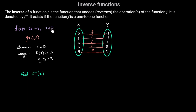Since x is greater than or equal to 0, when x equals 0 y equals negative 3, and for any x greater than 0, y will be greater than negative 3. So the range is y greater than or equal to negative 3. The inverse of f is the function that undoes f — so if f takes us from 0 to negative 3, then f inverse takes us from negative 3 back to 0.